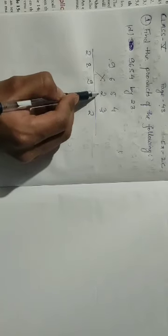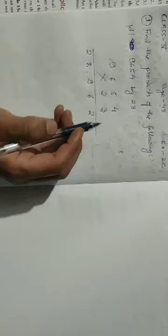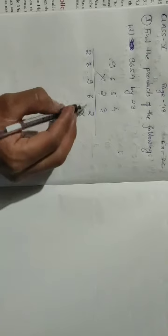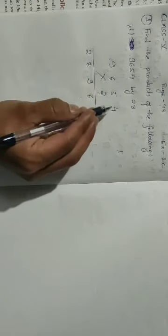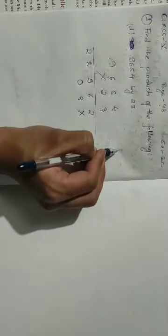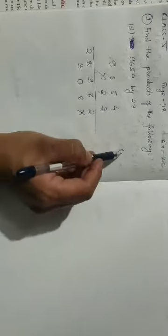Now we have finished multiplying with 3. Next we multiply with 2. Before multiplying with 2, you put 1 cross here. So: 2 fours are 8. 2 fives are 10, write 0 carry over 1. 2 sixes are 12, plus 1 is 13, write 3 carry over 1. 2 nines are 18, plus 1 is 19. So with 2 we have also finished.